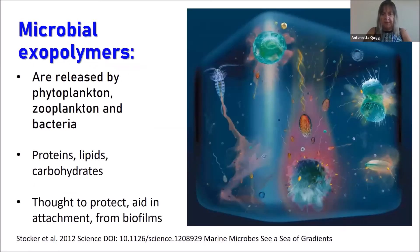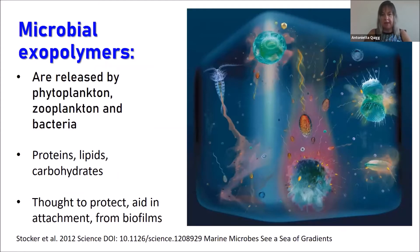This is one of my favorite diagrams because it shows these microbial organisms releasing what we call exopolymers. Exopolymers are essentially lipids, proteins, and carbohydrates. This material is very, very sticky, and as you might imagine, when it interacts with particles and other organisms in the water column, they will come together and aggregate and form that marine snow that we can see.